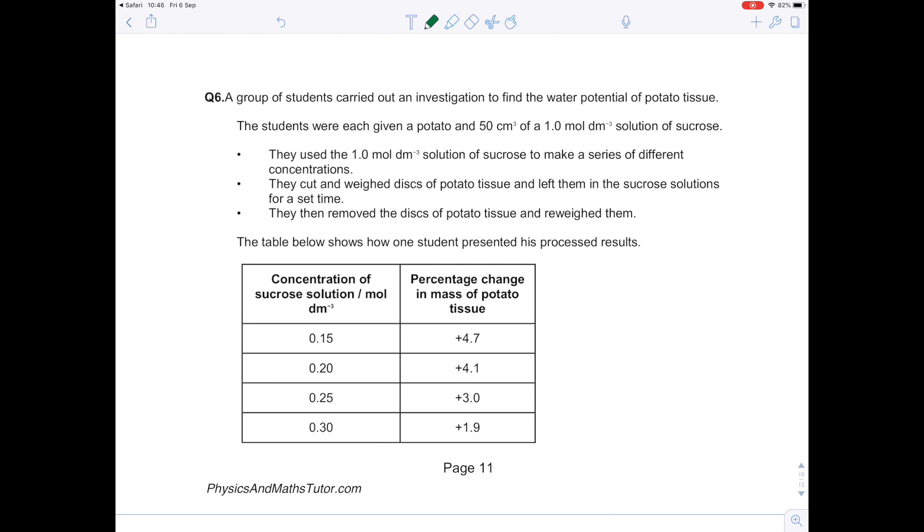Question 6: A group of students carried out an investigation to find the water potential of potato tissue. The students were each given a potato and 50 cm³ of a 1 molar dm⁻³ solution of sucrose. They used the 1 molar solution of sucrose to make a series of different concentrations—that will be our independent variable.